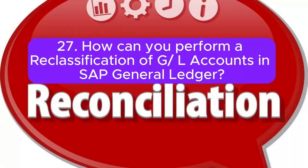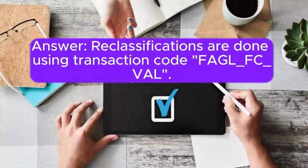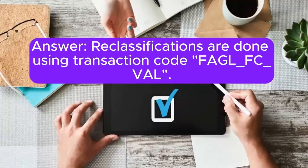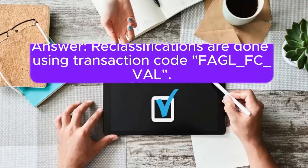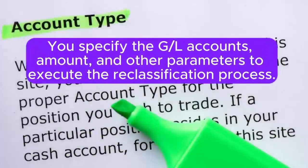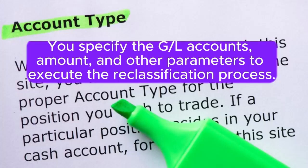Question 27: How can you perform a reclassification of General Ledger accounts in SAP? Answer: Reclassifications are done using transaction code FAGL_FC_VAL. You specify the General Ledger accounts, amount, and other parameters to execute the reclassification process.